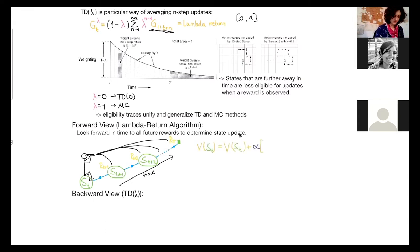And the value update looks like this. So we add to the current value estimate the step size multiplied with the lambda return minus the value estimate of the current state. So basically the only difference is now that we use the lambda return here, instead of the n-step return or the one-step return in TD 0. So this is still the TD error.